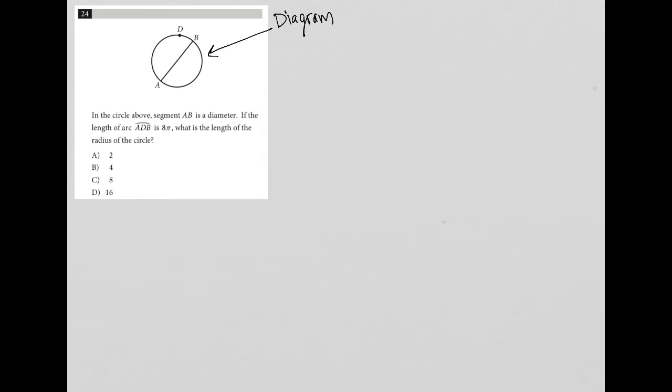So it says in the circle above, segment AB is a diameter, which means it goes through the center. So I'll just put that in there for myself. If the length of arc ADB is 8π, so from here all the way around to here is 8π. What is the length of the radius of the circle?